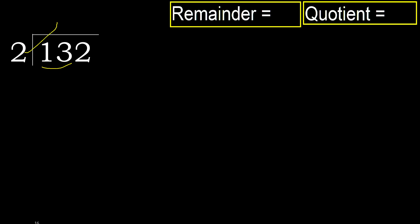2 multiplied by which number is nearest to 13 but not greater? 2 multiplied by 7 is 14 — 14 is greater. 2 multiplied by 6 is 12, which is not greater. So: 13 minus 12 is 1.